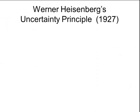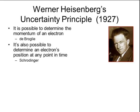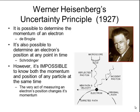Finally, in 1927, a German physicist named Werner Heisenberg proposed his uncertainty principle. By this point in time, scientists knew that it was possible to determine the momentum of an electron. That was originally proposed by de Broglie. Scientists also knew that it was possible to calculate an electron's position at any point in time using Schrödinger's equation. What Heisenberg proposed was that it's impossible to know both the momentum and the position of an electron at the same time.